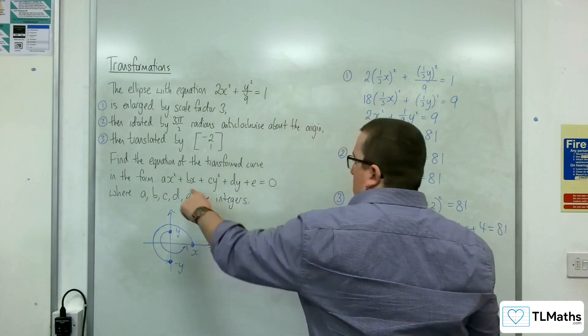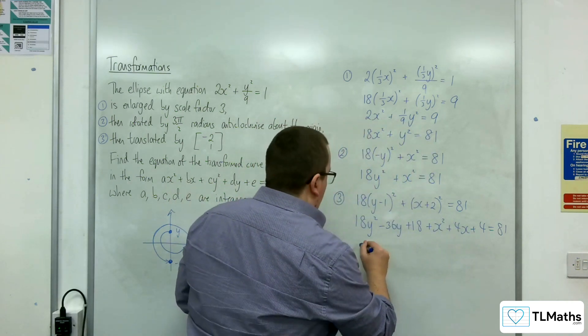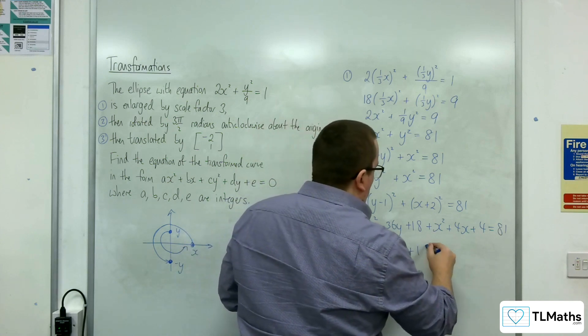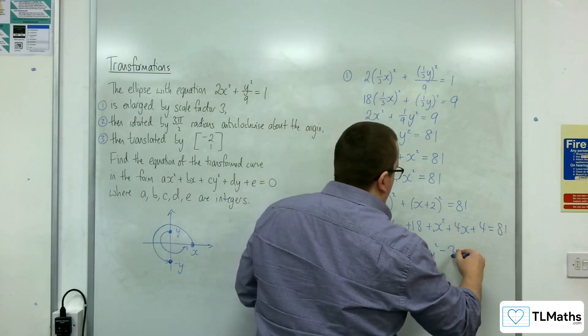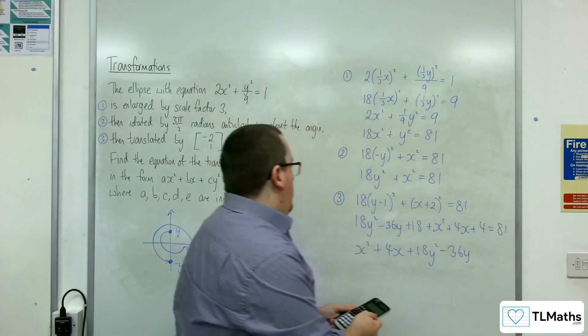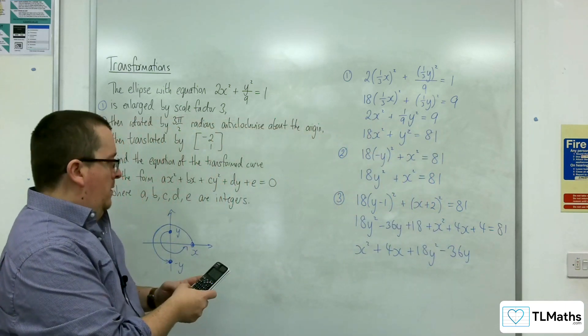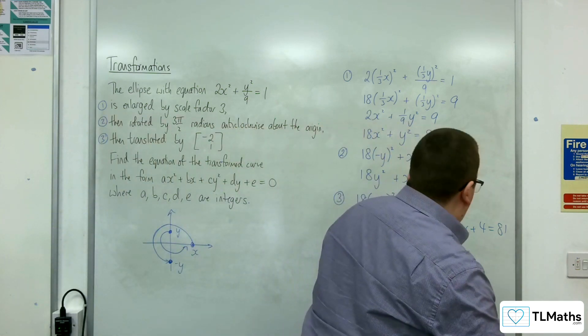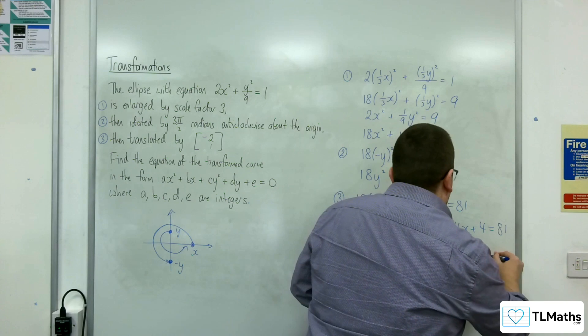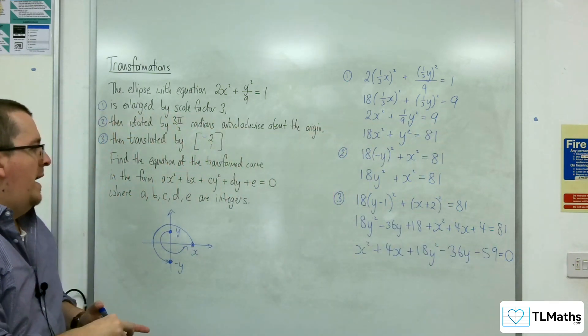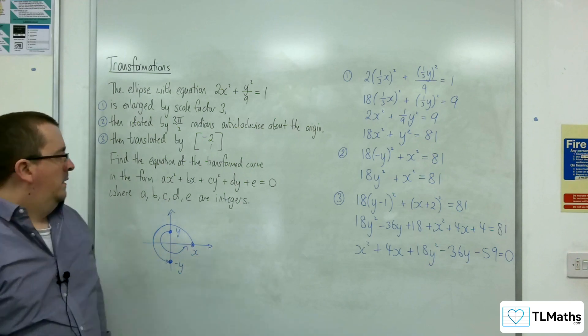So now let's get it into the format we want. So we want the x squared first, then the 4x. Then we've got the 18y squared. Then the minus 36y. Then we've got the 18 plus the 4 take away 81 is minus 59. And that's equal to 0. And that is now in the format that I wanted.